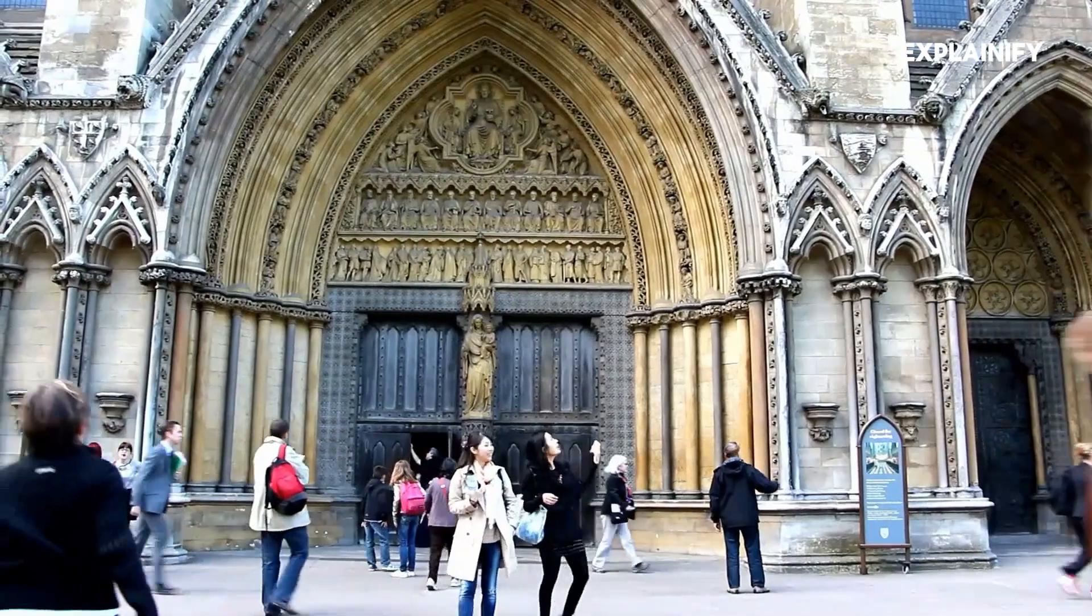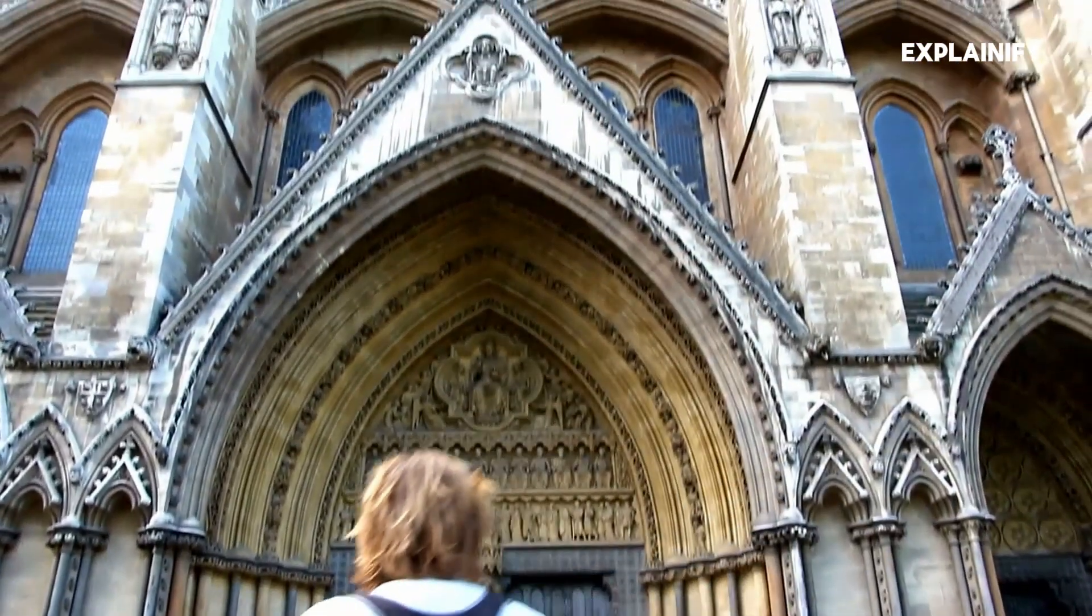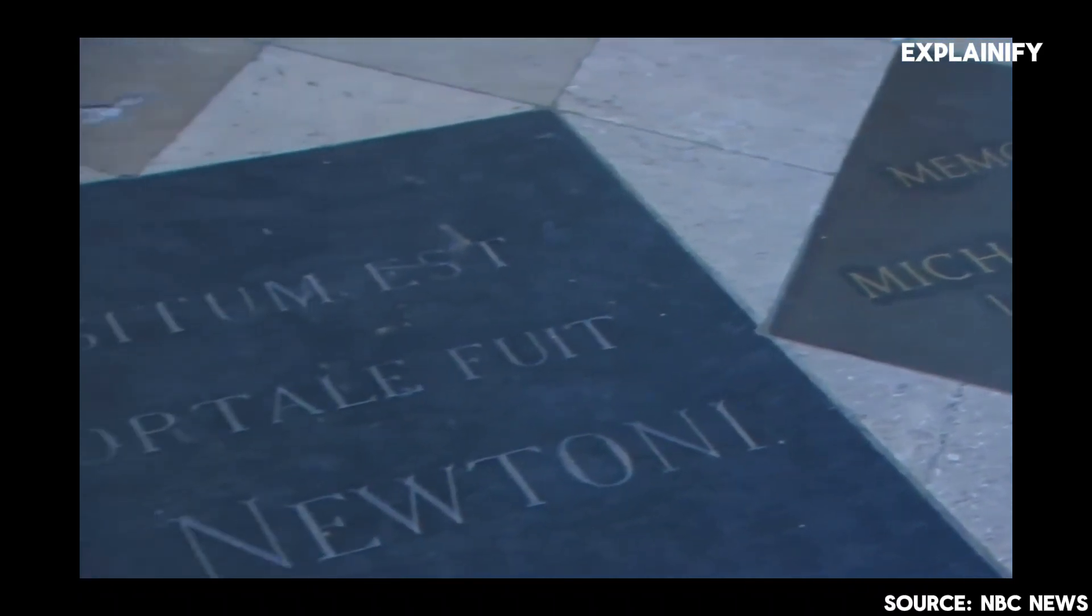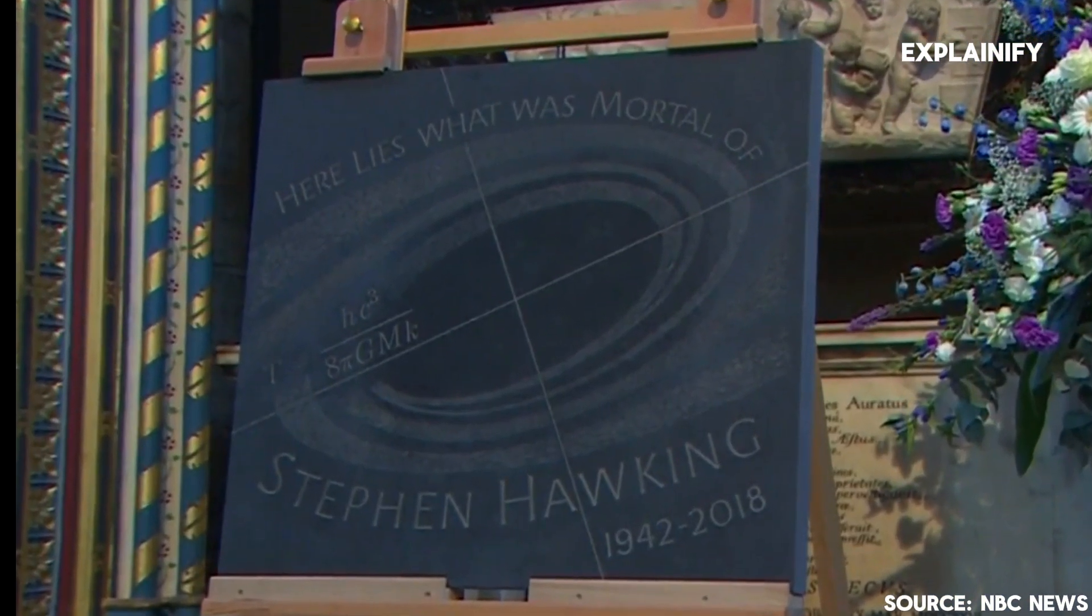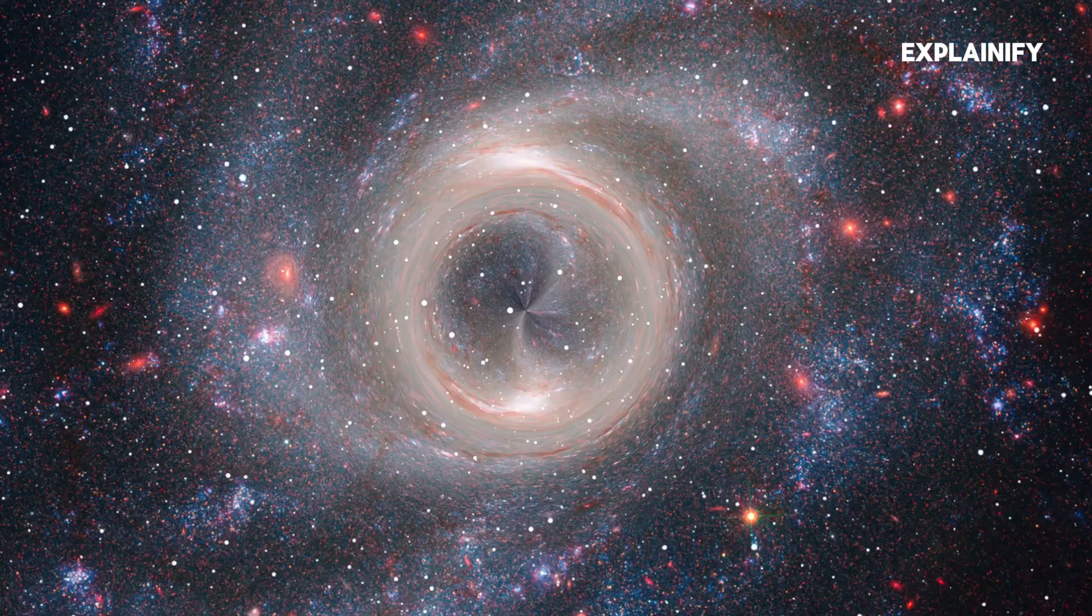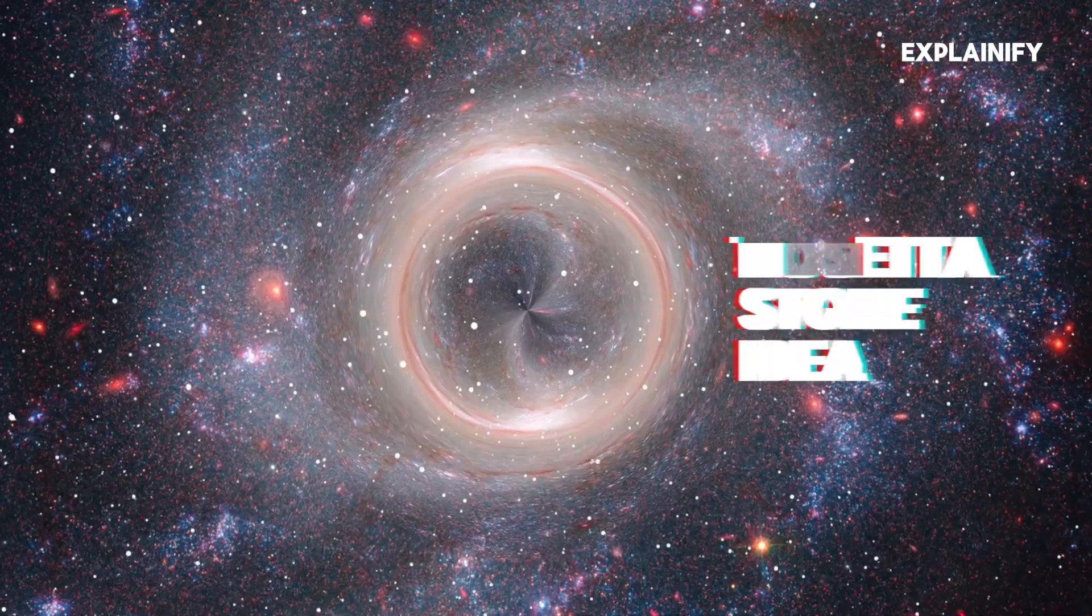And that's so important, and I show this picture in the show, that you go into Westminster Abbey and look on the floor of Westminster Abbey, on Stephen's memorial stone, then you find his equation, the temperature of a black hole, literally chiseled in stone on the floor of an abbey. So you might say, why? Why is it so important? This was the key. This was this Rosetta Stone idea.